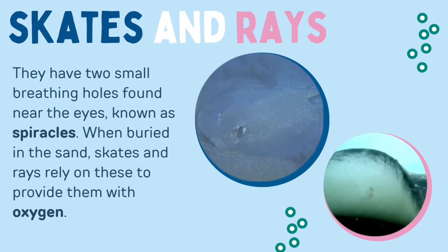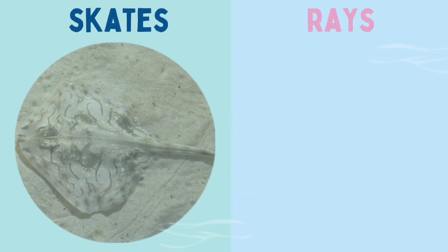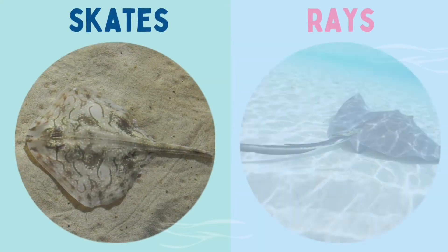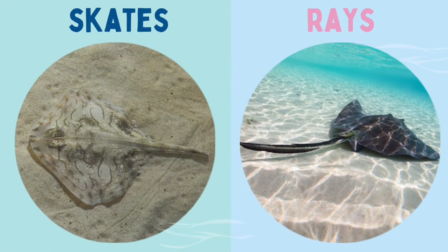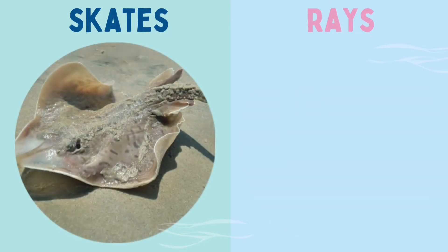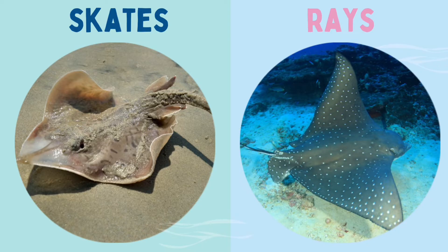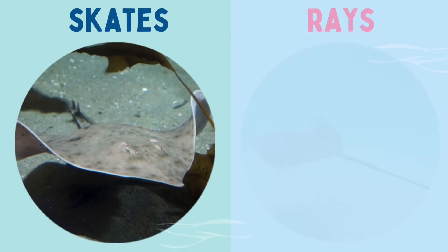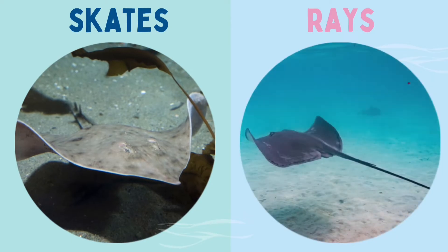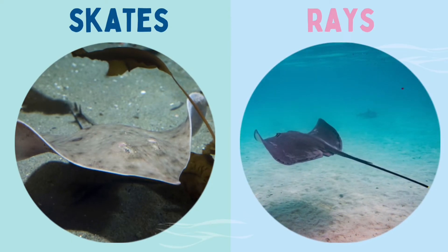When buried in the sand, skates and rays rely on these spiracles to provide them with oxygen. Lots of similarities, so how do we tell these two fish apart? A skate's tail tends to be thicker and wider, whereas a ray's is slender and whip-like. Some rays have a stinging spine in the tail which skates don't have. Another key difference is that skates reproduce by laying eggs, whereas rays give birth to live young.